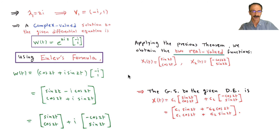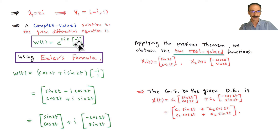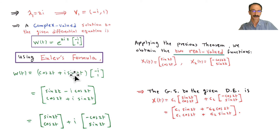To summarize example two: once you find lambda and v with complex numbers, form e^(λt)v, apply Euler's formula to get cosine and sine terms, multiply by the eigenvector, then split into two parts — the u part and the v part — which become x1 and x2, the real-valued solutions.